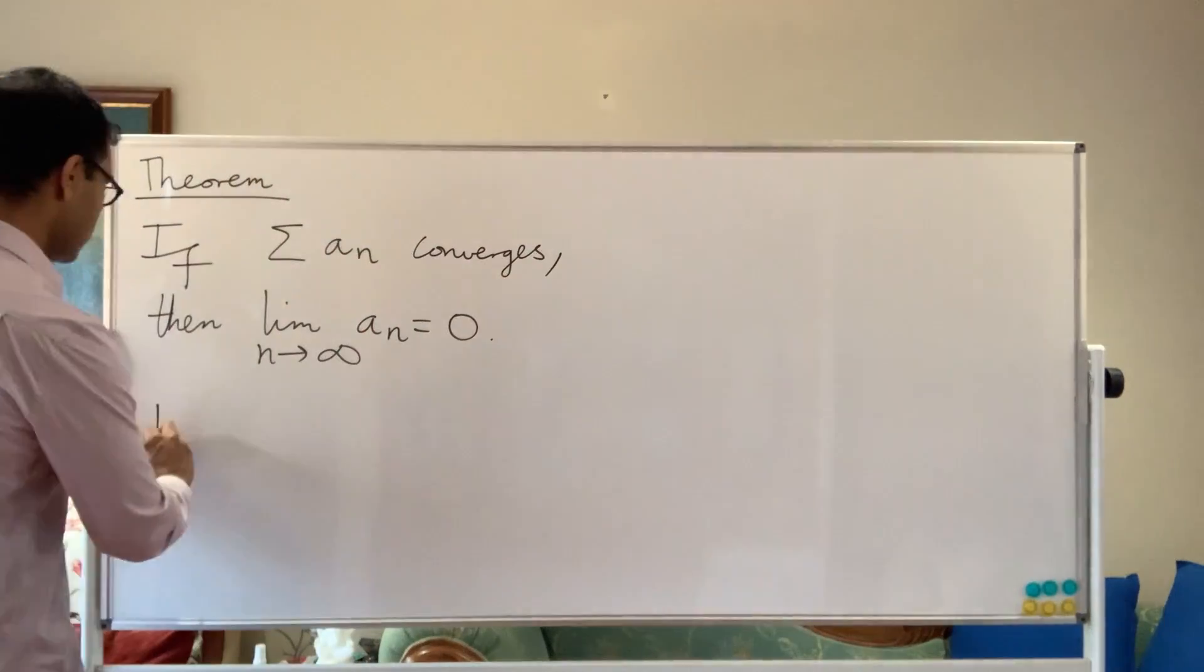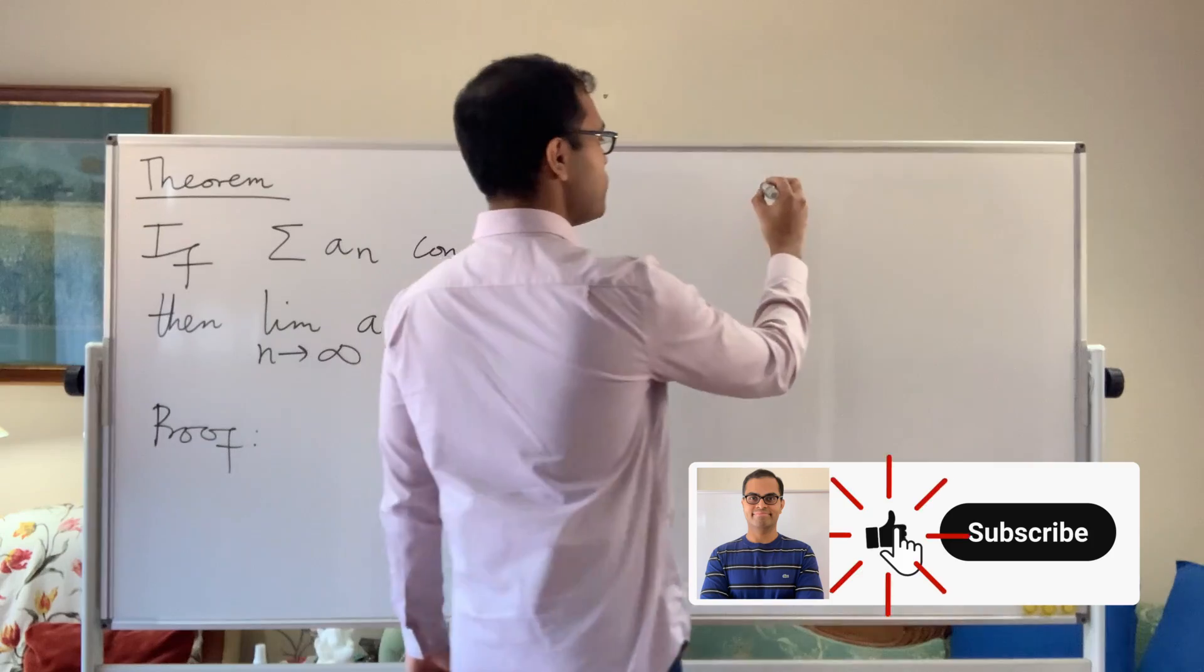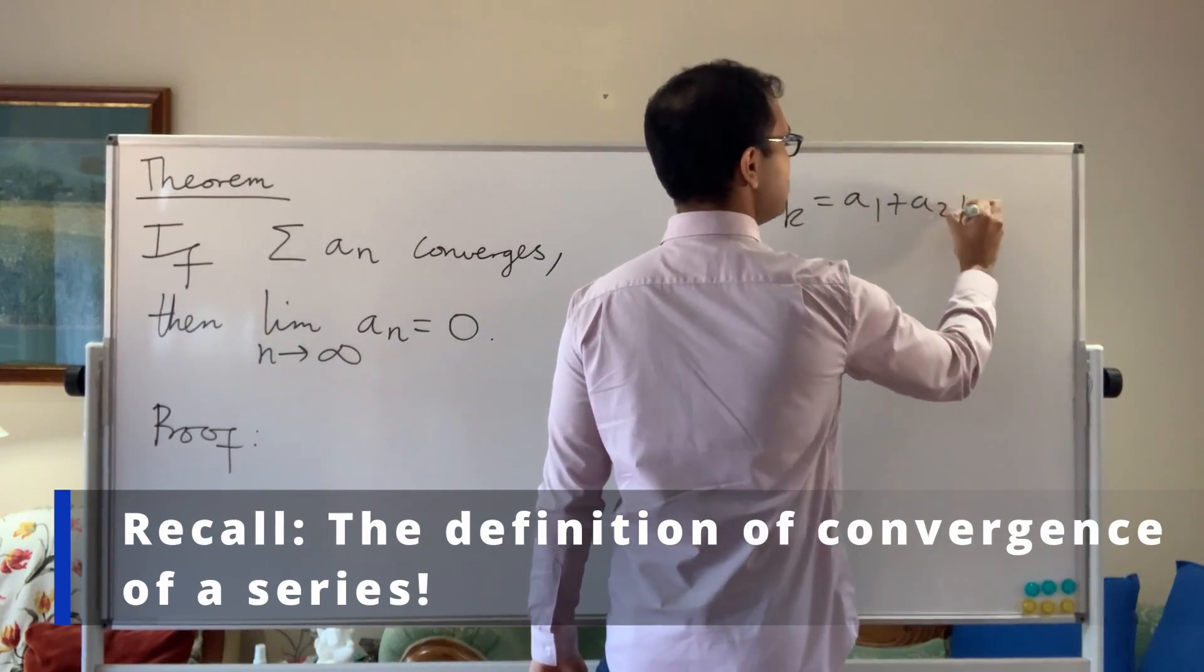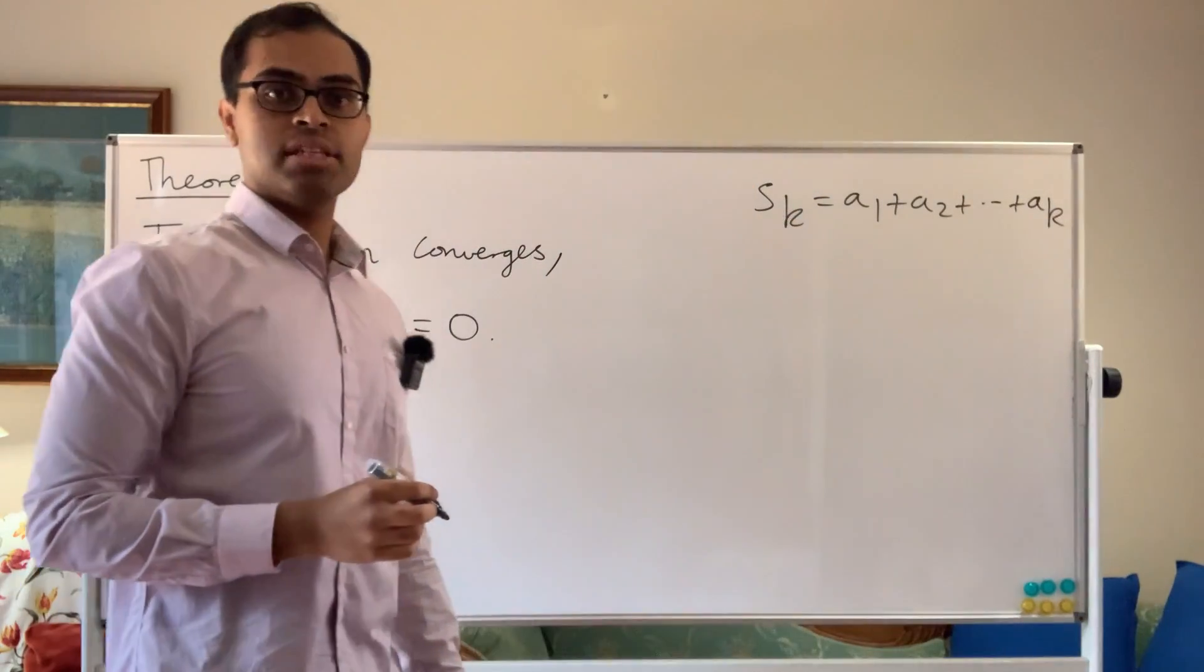So for a sum to converge, well, basically, so here's the proof. So let's first think about what it means for a sum to converge. So I look at the partial sums of a series. S_k is a_1 plus a_2 plus dot dot dot plus a_k. This is the sum of the first k terms in the series.